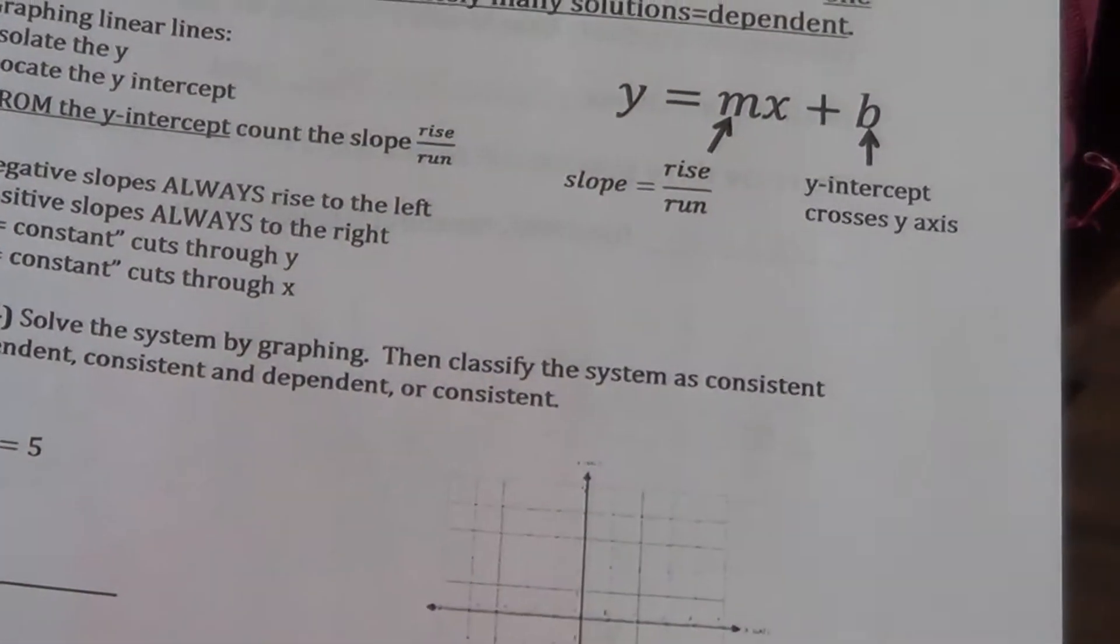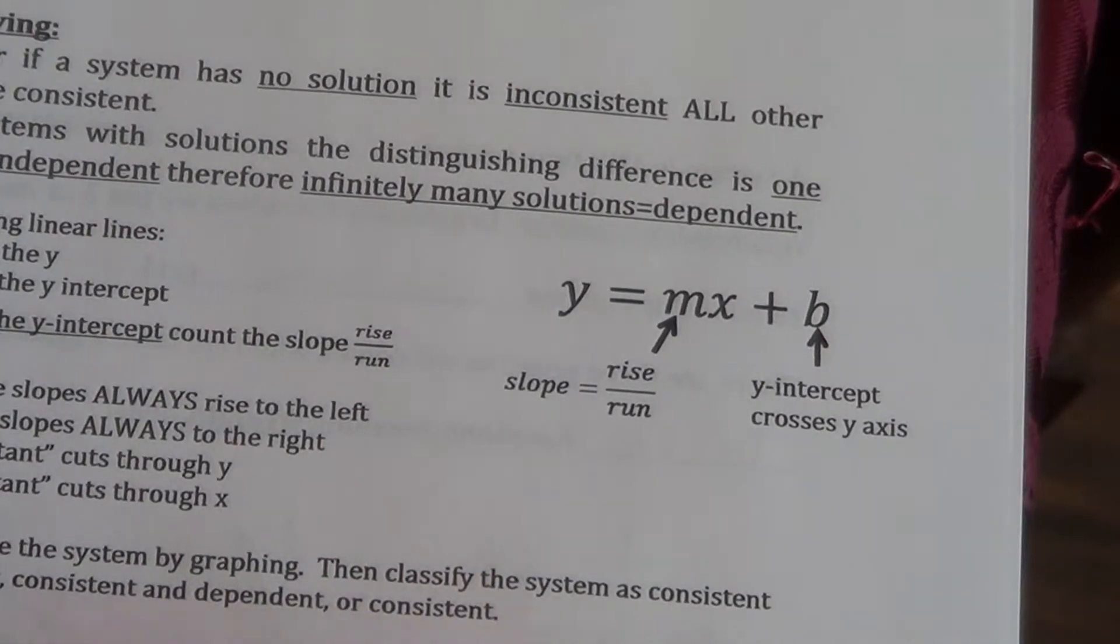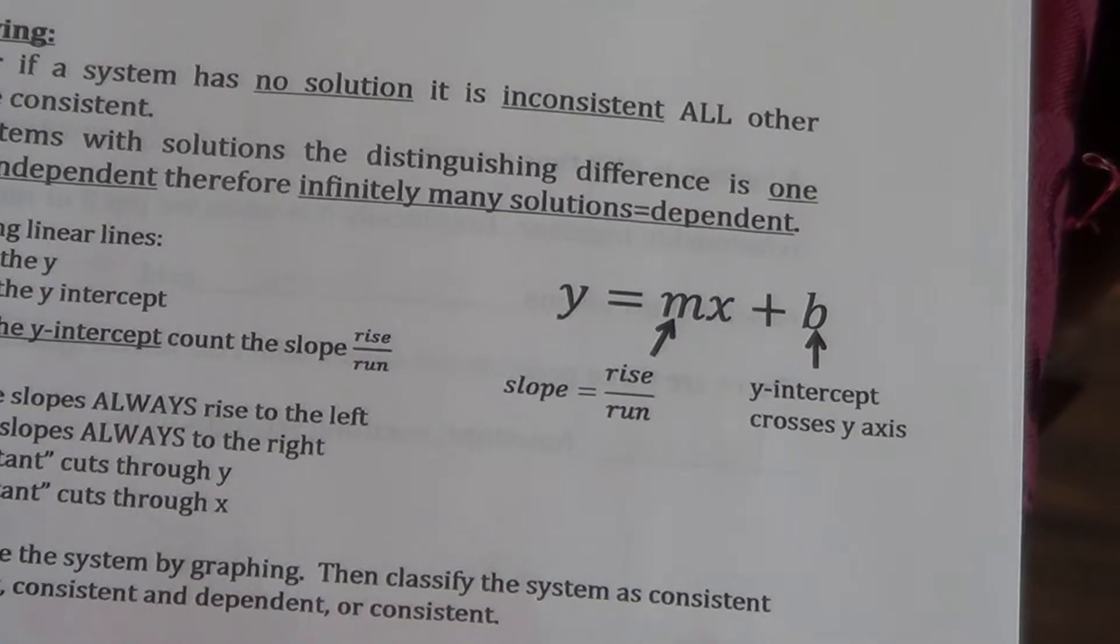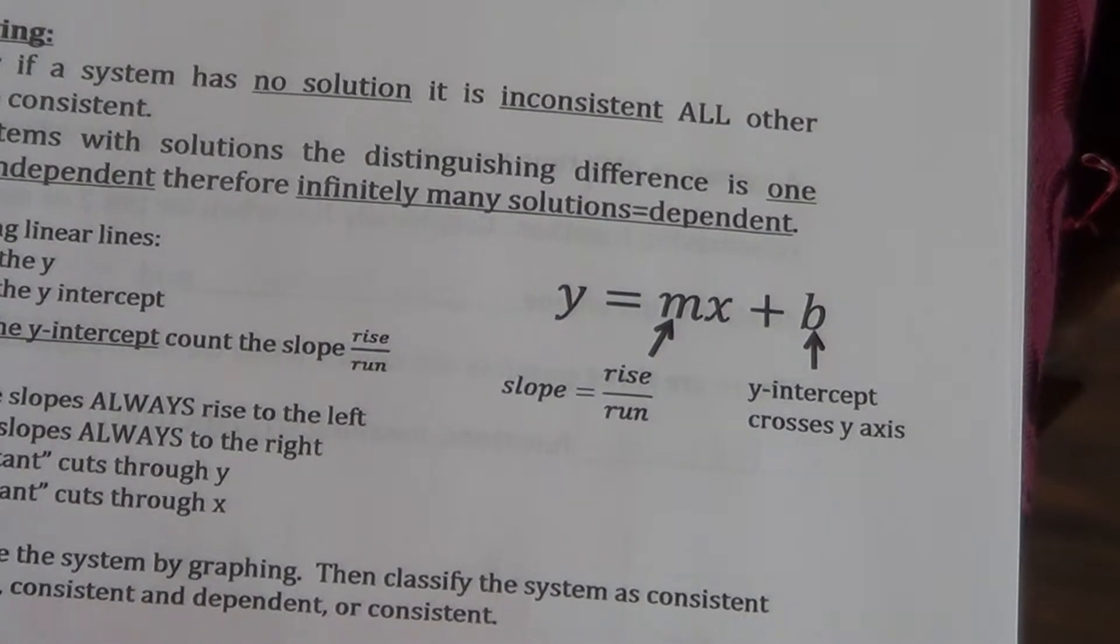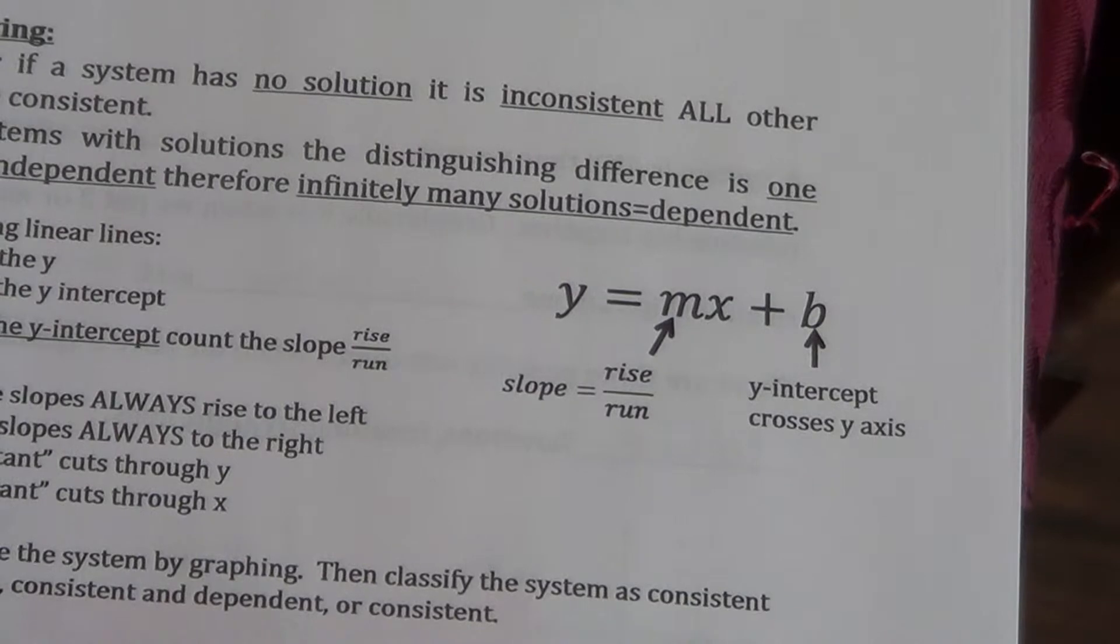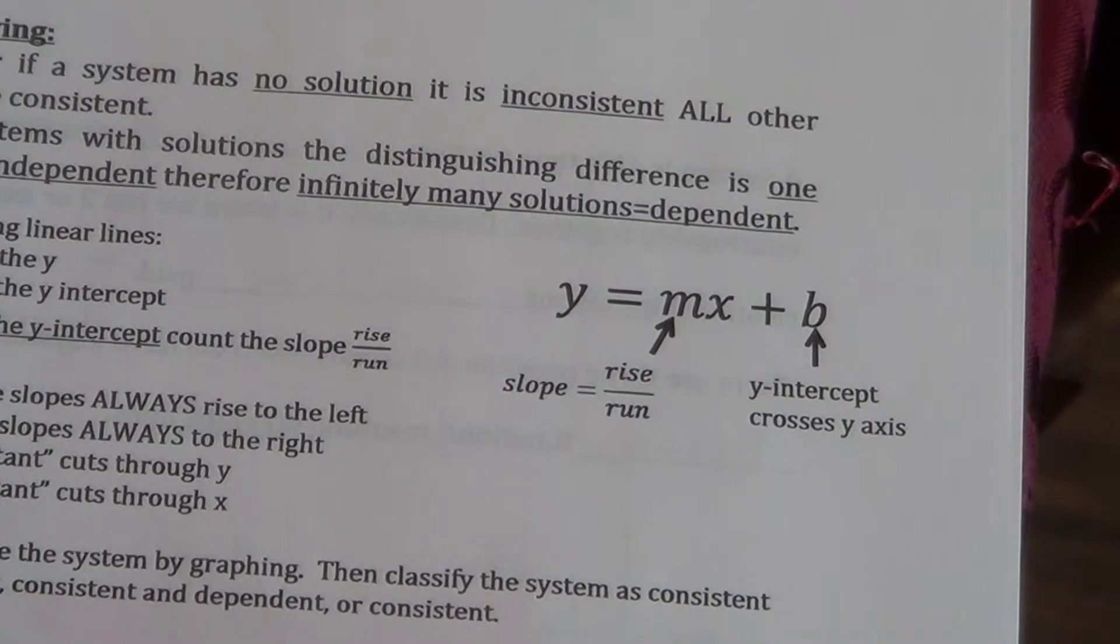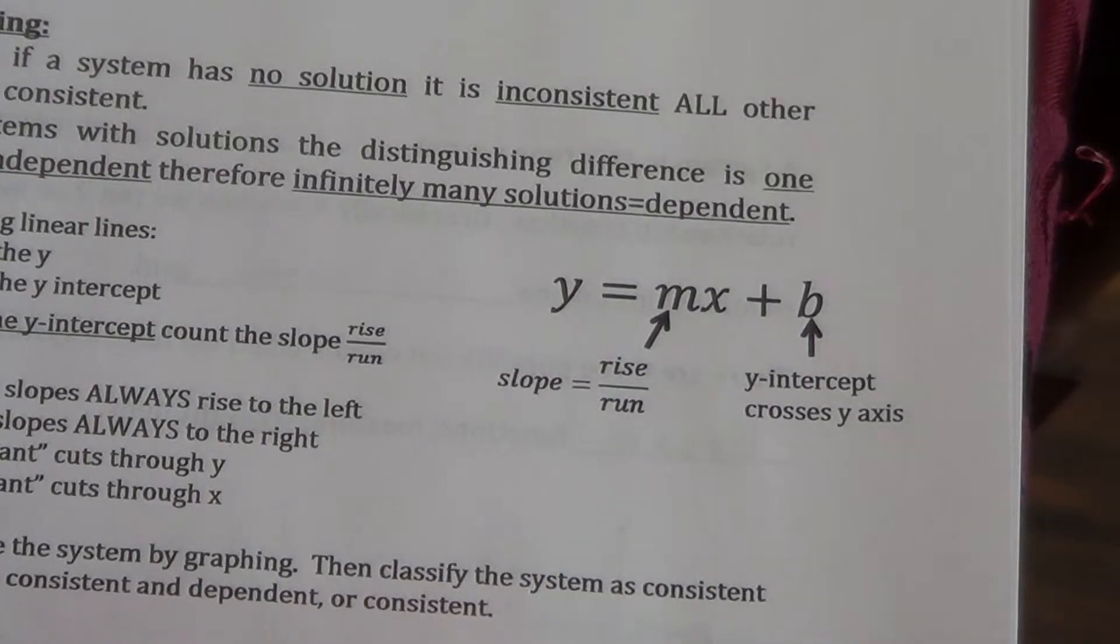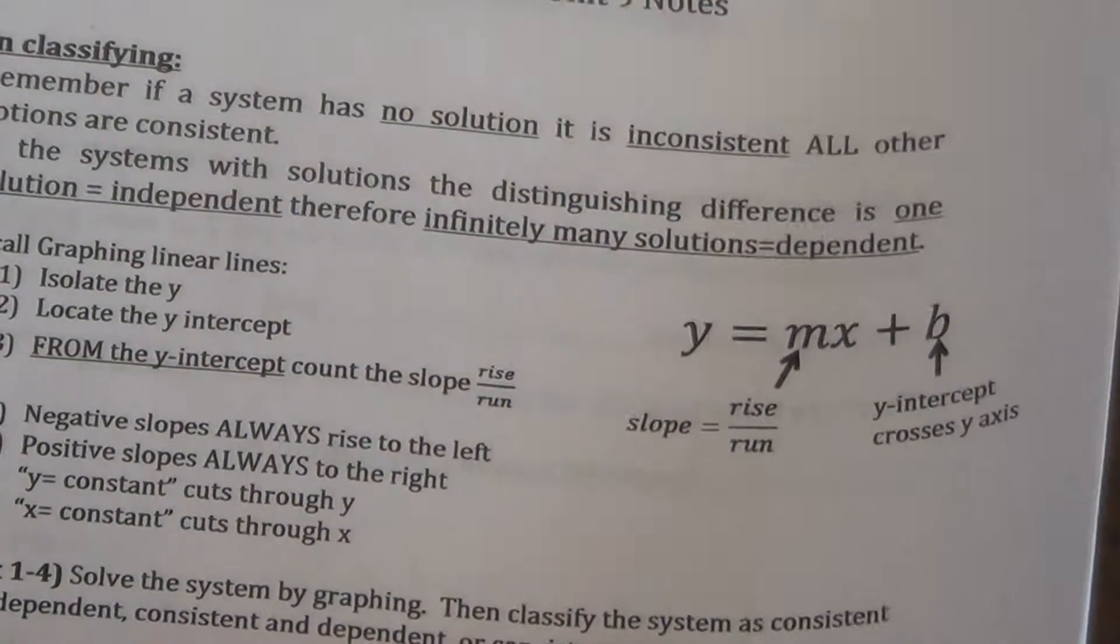Turn over to page four now. On page four, I just simply went through some of those names. Go ahead and read that up at the top. It's explaining the no solution, inconsistent, and then the distinguishing factors of the consistent solutions.